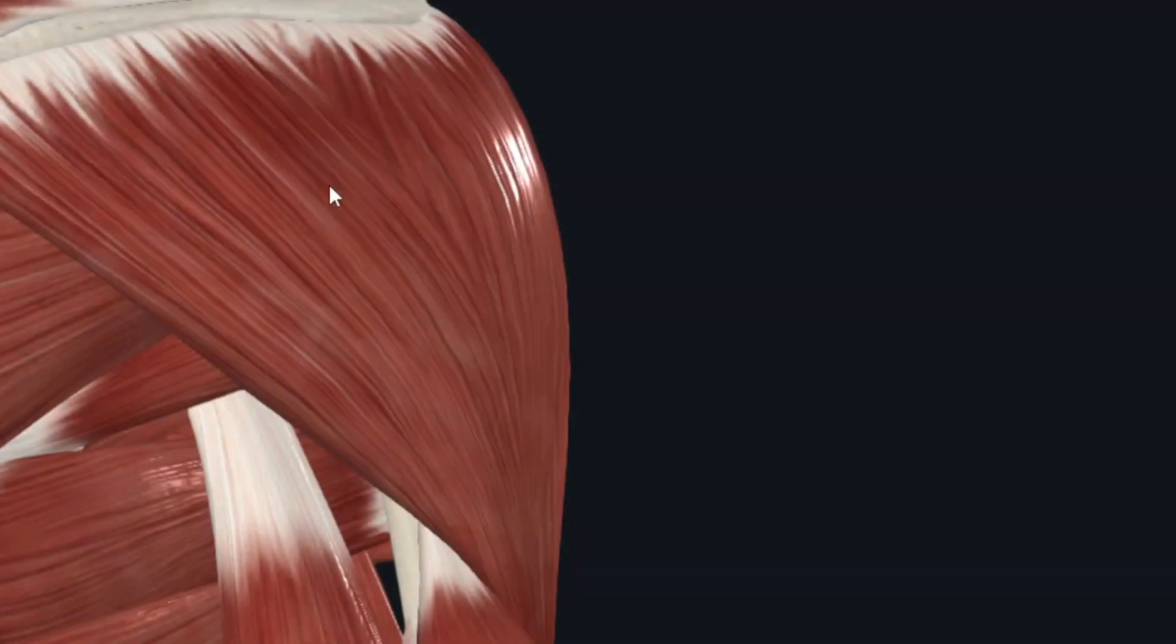This model is showing all the muscles of the shoulder region. The quadrangular space lies deep to the deltoid muscle. We will remove the deltoid and some other muscles so that the quadrangular space can be seen clearly.